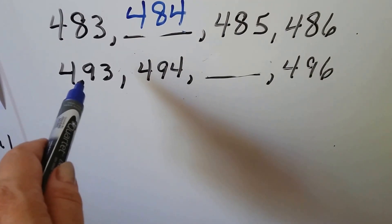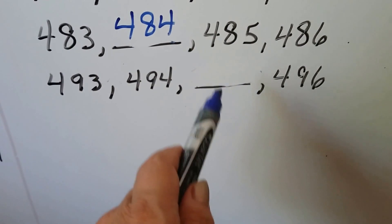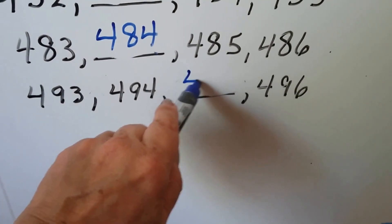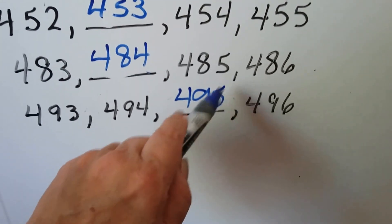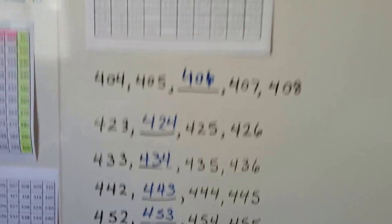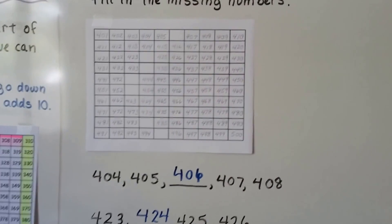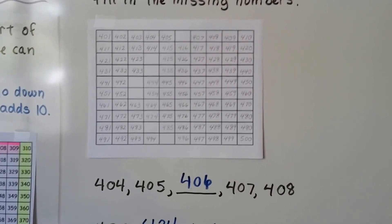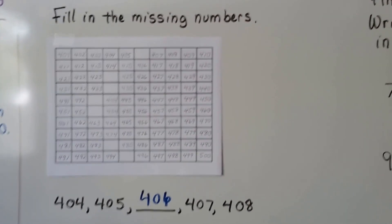How about 493, 494, 495 — right? These were easy because they went up by one, and that's how the numbers were missing on our hundreds chart. They all go up by one as we go that way.